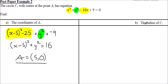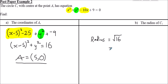For part b, the radius: since we have it in the useful form, the radius is just the square root of the value on the right-hand side — √16 = 4.